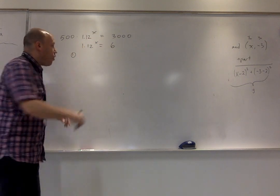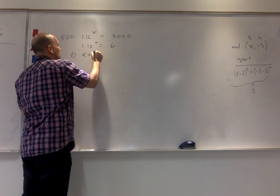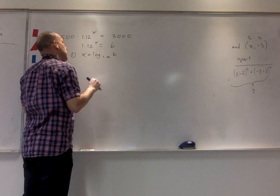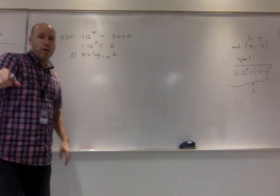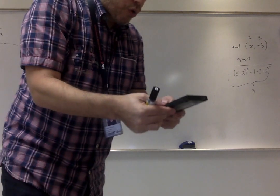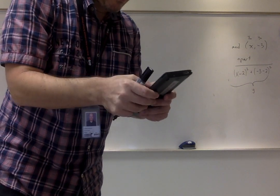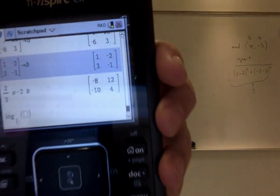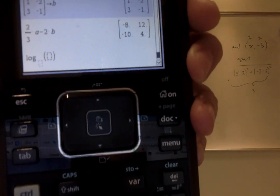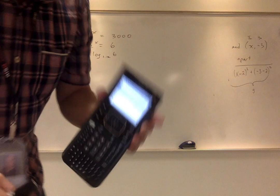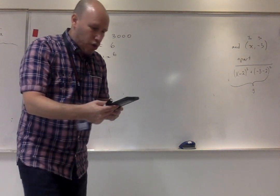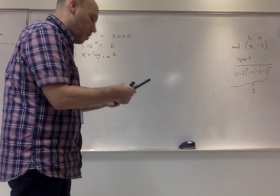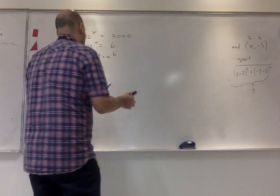Method 2, write this as a log. Go to your graphing calculator, do control log, and you'll see that it actually gives you the log. It allows you to fill in the numbers. So you would put in 1.12, put the 6 up there. Answer: 15.8.